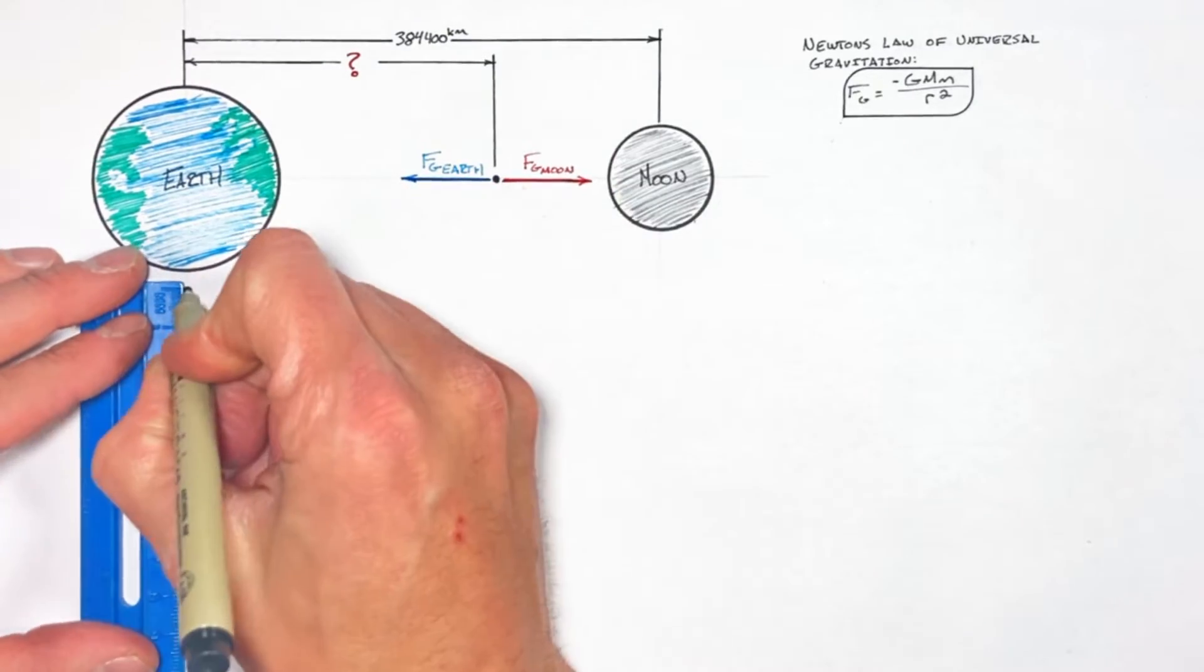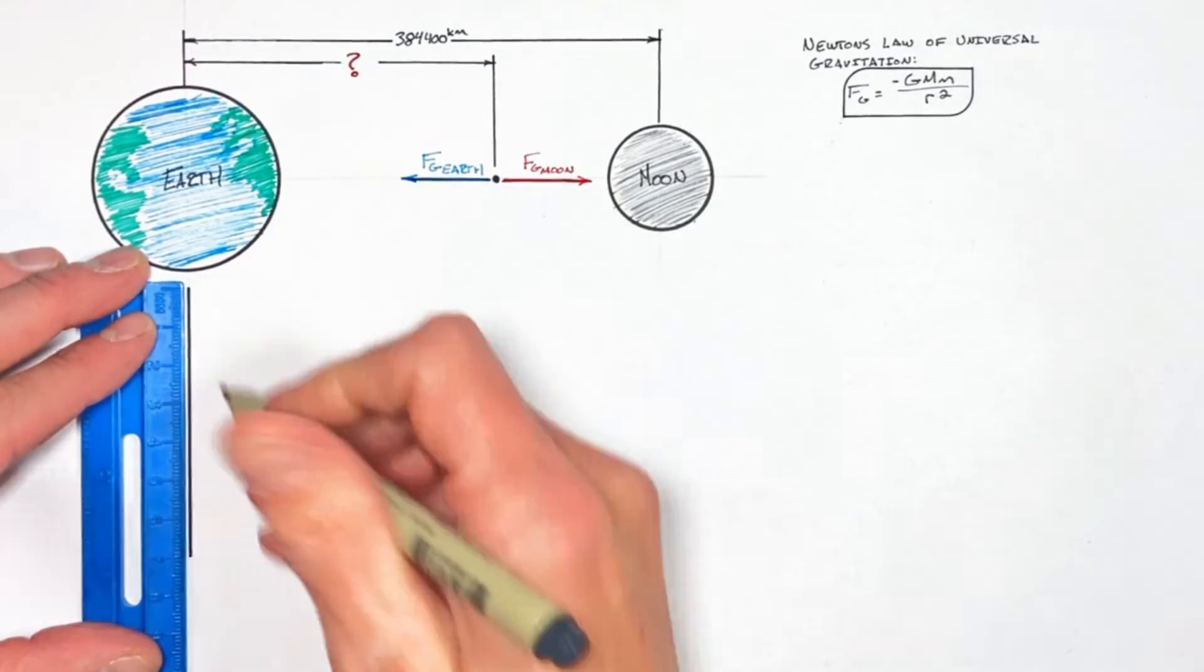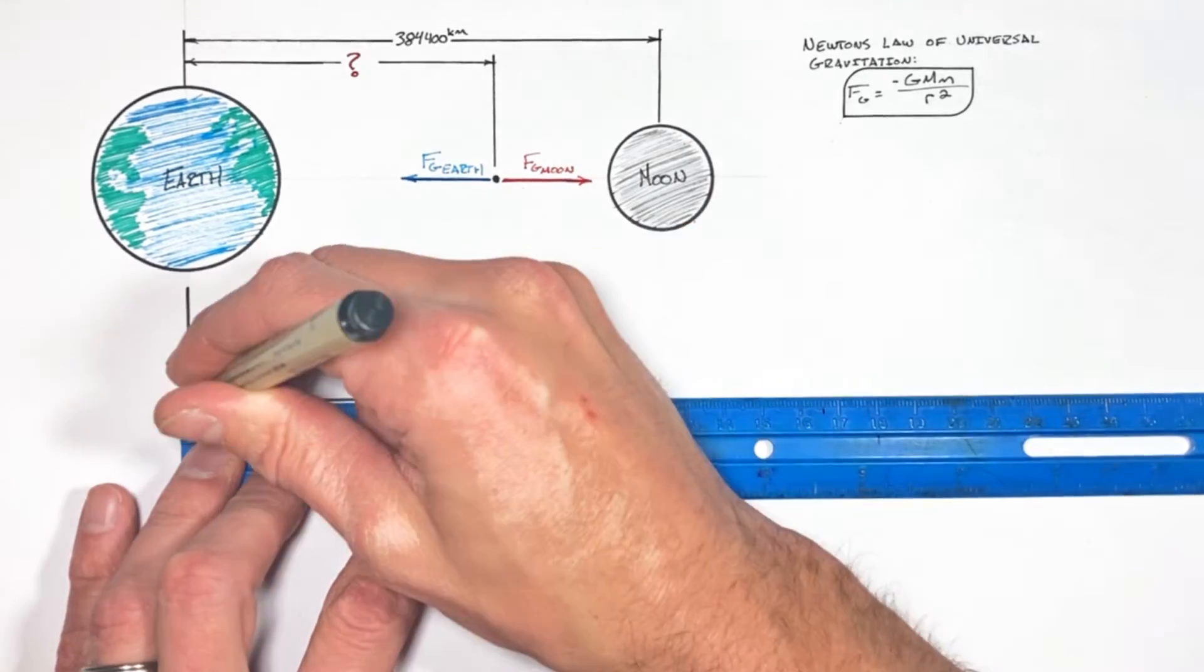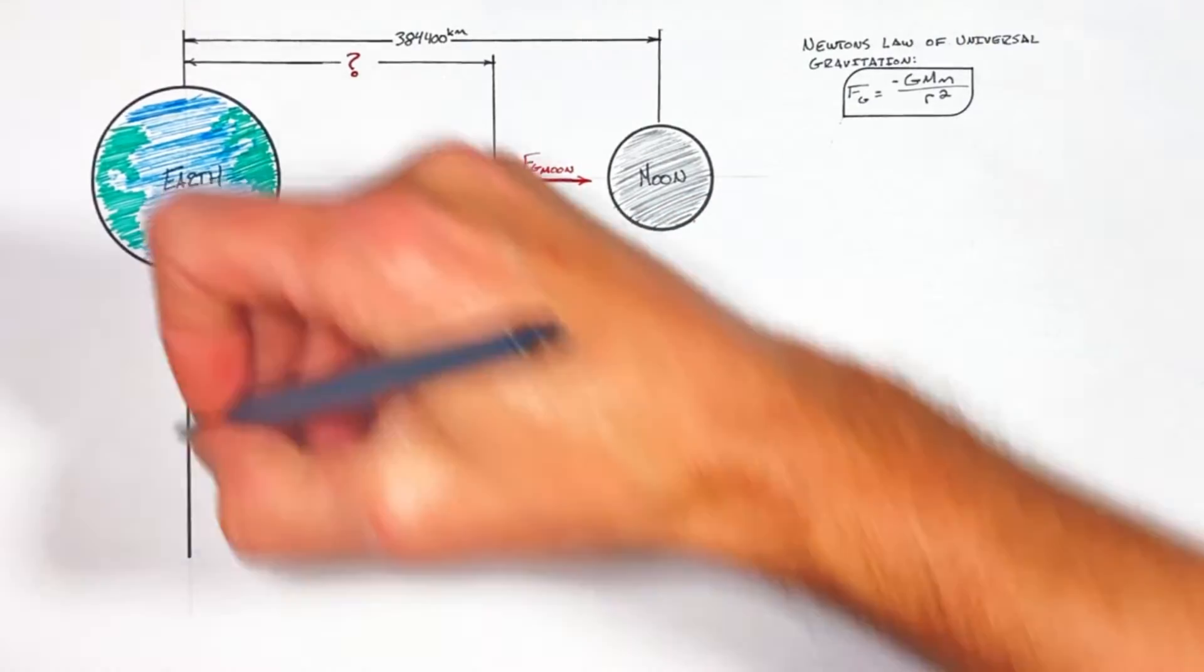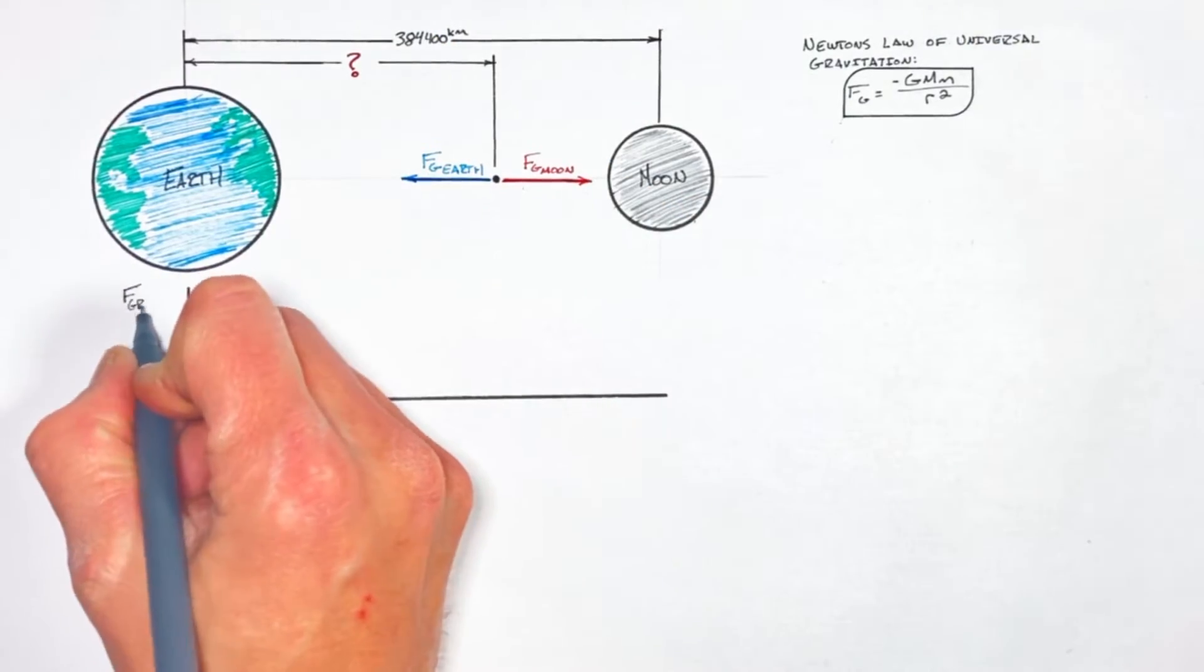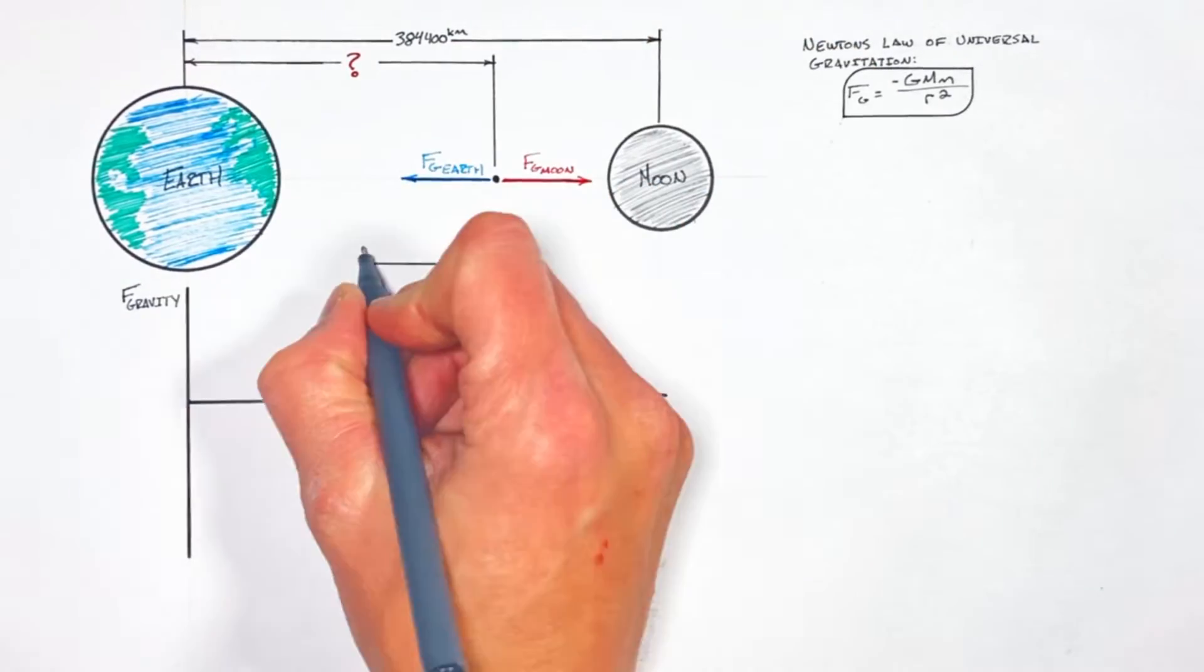Now a lot of people like to dive right into the math of this problem, but in order to get a conceptual understanding for what's going on, let's graph the force by gravity as a function of position between the Earth and the Moon. Let's say the direction away from the Earth is positive.